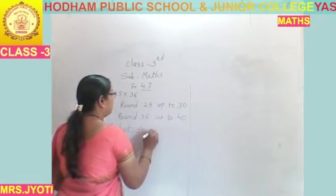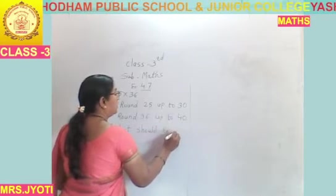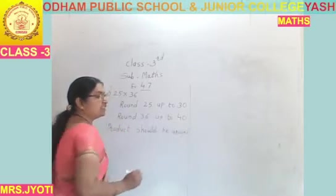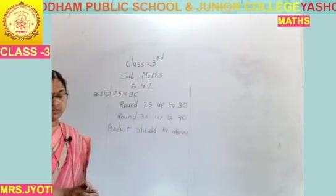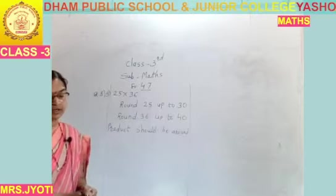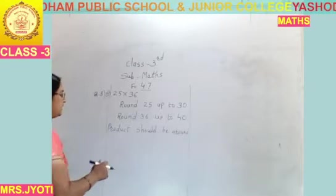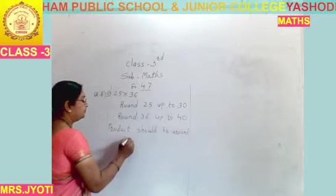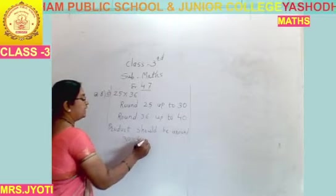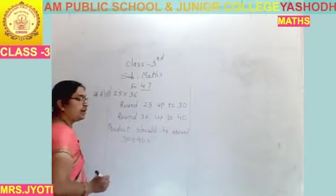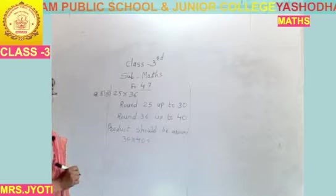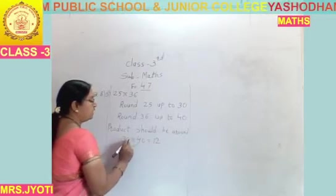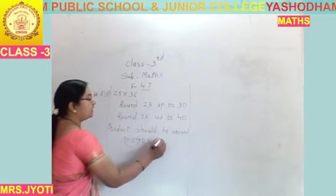Product should be around 30 multiplied by 40. How many zeros are there? 2.